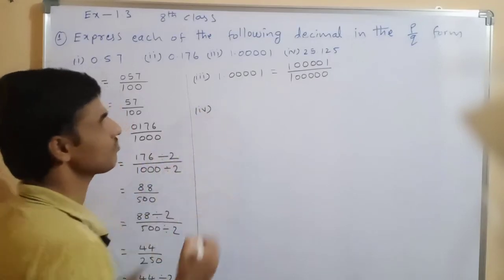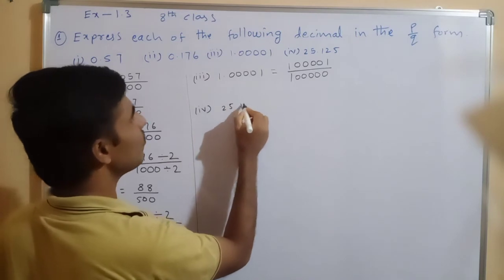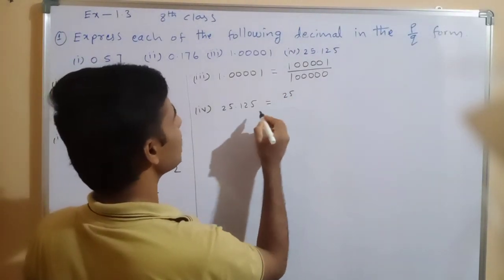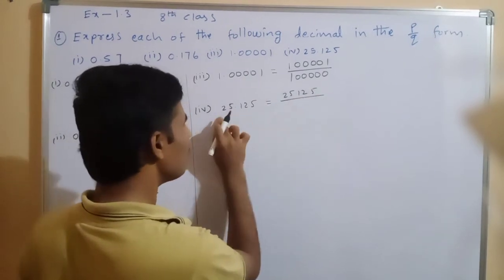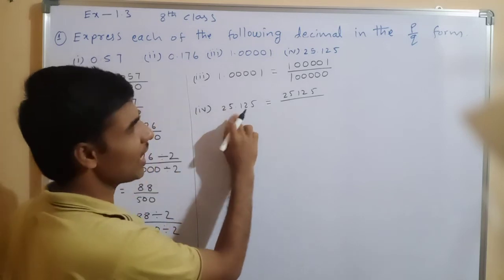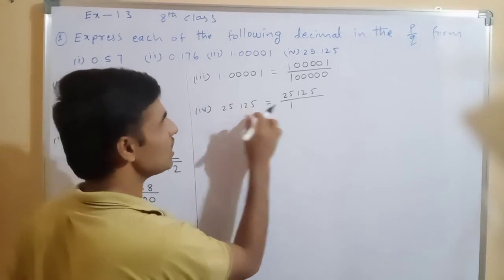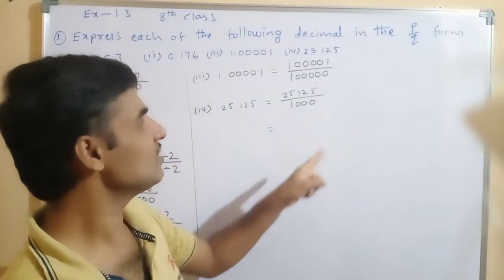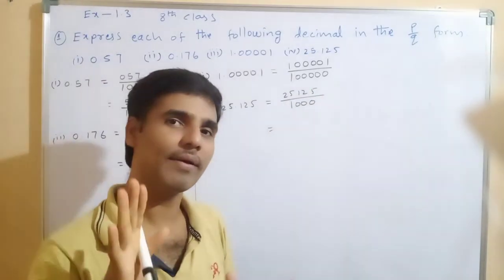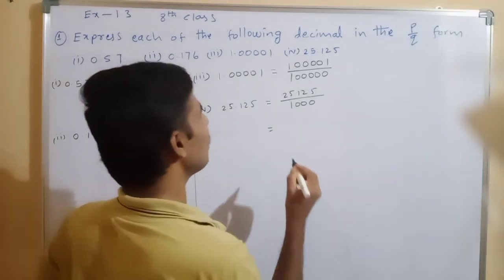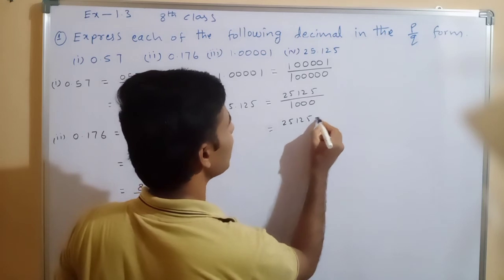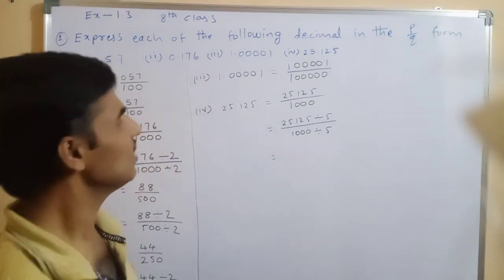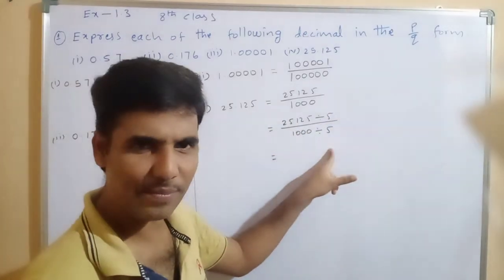Fourth problem: 25.125. Terminate the point — we get 25125 divided by, before the point write 1, after the point there are 3 digits so write 3 zeros: 1000. By the divisibility rule of 5, the last digit is 5, so both numerator and denominator are divisible by 5.